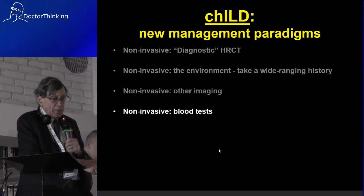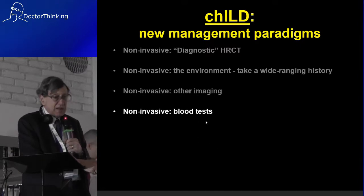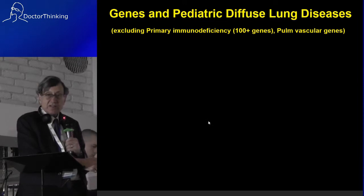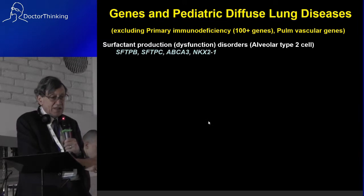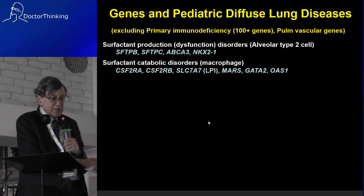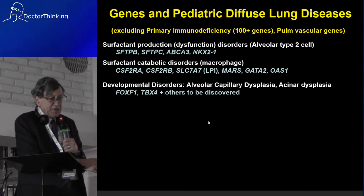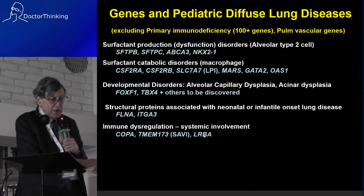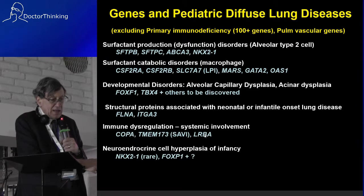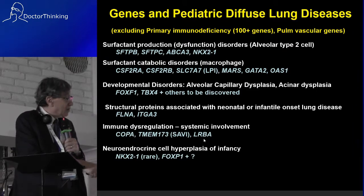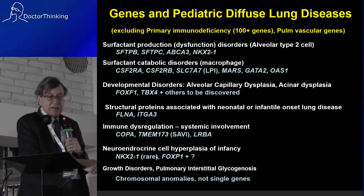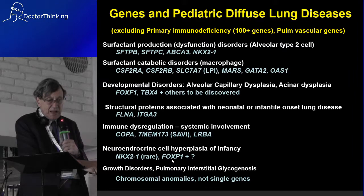What about blood tests? There are a huge number of genes — surfactant production, surfactant catabolic disorders, developmental disorders, structural proteins, immune dysregulation, NEHI, and growth disorders. There are numerous genes and increasingly we are looking for specific genetics.